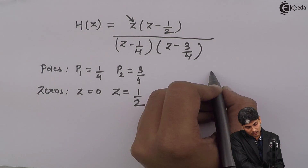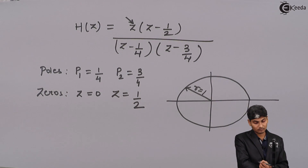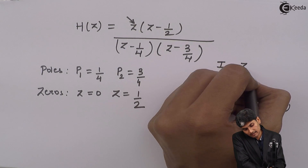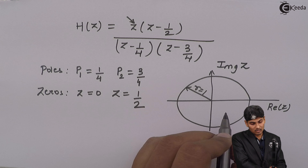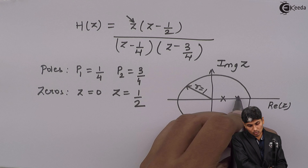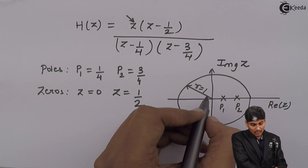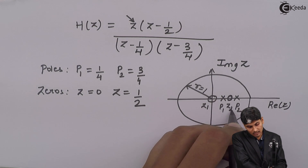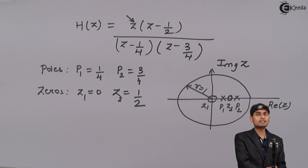To represent this, we go to the Z-plane where there is a unit circle with radius r = 1. Since 1/4 and 3/4 are both less than 1, they are real-valued poles on the real axis (x-axis), with no imaginary component. We place two poles at z = 1/4 (p1) and z = 3/4 (p2), and zeros at the origin (z1) and at z = 1/2 (z2). This is the pole-zero representation of the given transfer function.